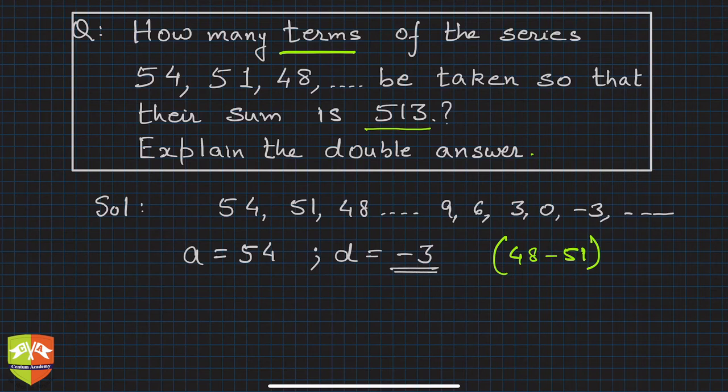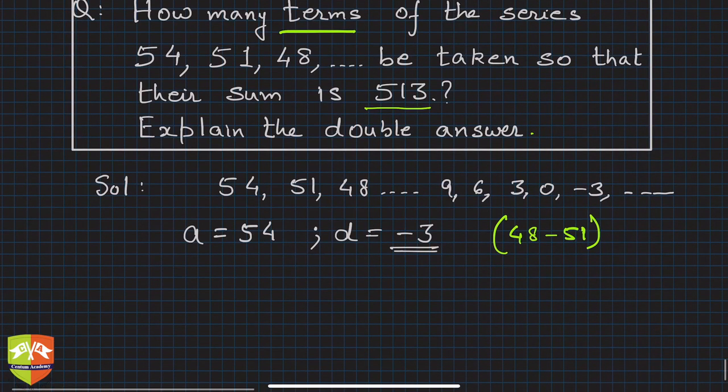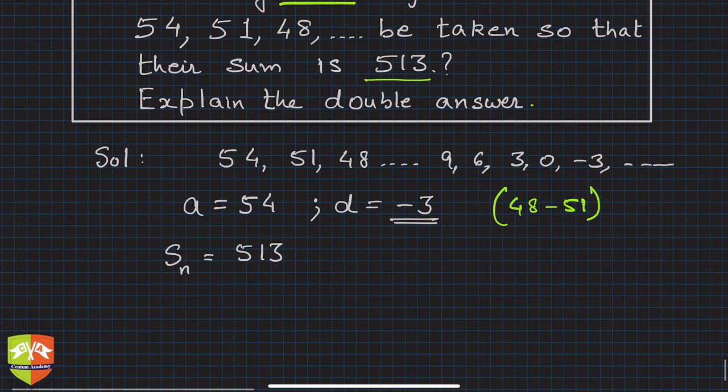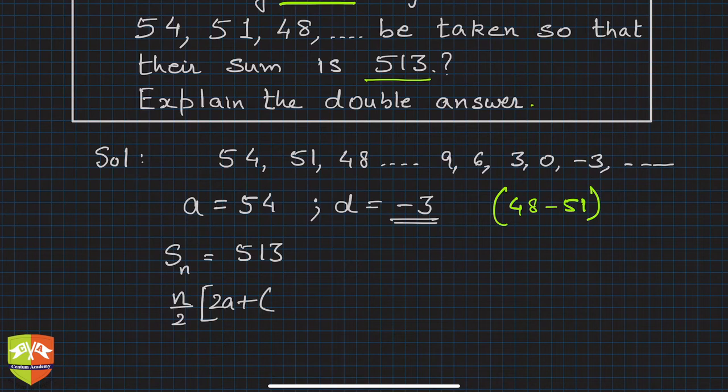It says the sum is 513. Let's say S_n is 513, n terms, and we have to find this n. By the formula of sum of first n terms of an AP, we can write: (n/2)[2a + (n-1)d] = 513.